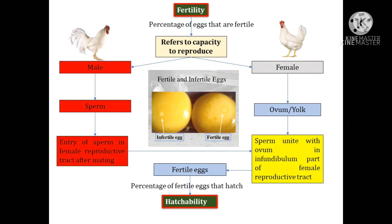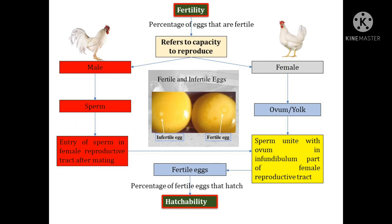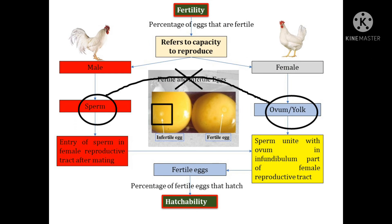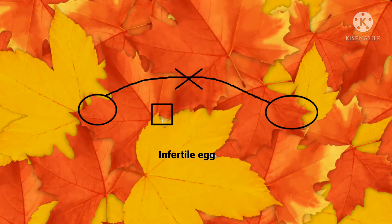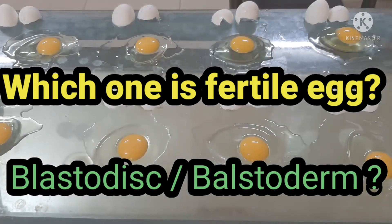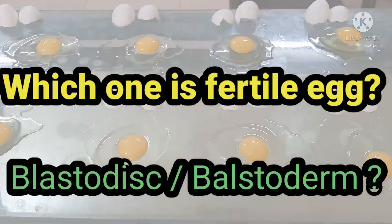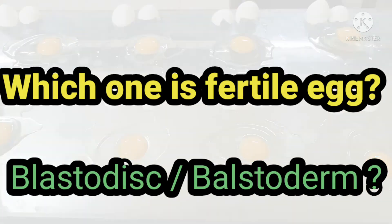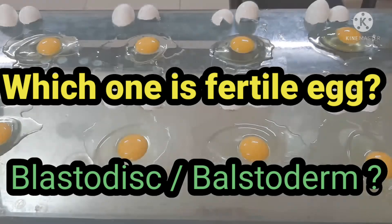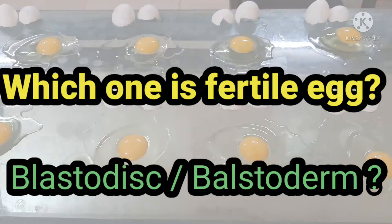After full development of the egg, you can find a blastoderm on the yolk material, and that indicates a fertile egg. But when there is no involvement of a male breeder bird, the sperm cannot unite with the ovum and does not form a zygote. In that case, instead of a blastoderm, we can find a blastodisk on the yolk, so the egg is infertile. Remember, the most important thing is that for an egg to be fertile, it needs to contain the genetic material of both the hen and a rooster.